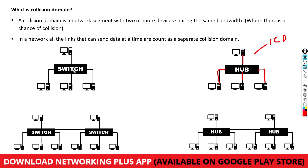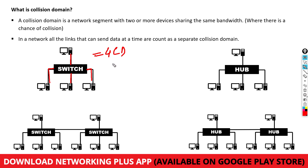Now look at the switch. A switch is not a broadcast device — after the first time it broadcasts, it only sends data to the specific destination device. So PC one can send data to PC two, while at the same time PC three can send data to PC four, and PC four can send data to PC one simultaneously. How many links can send and receive data at the same time in this switch network? One, two, three, and four — four links can send and receive data at the same time. So we have four collision domains in a switch with four devices.